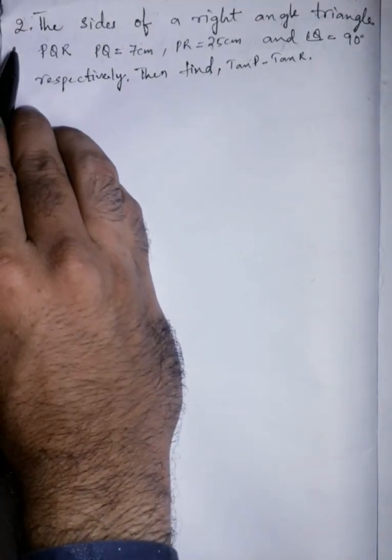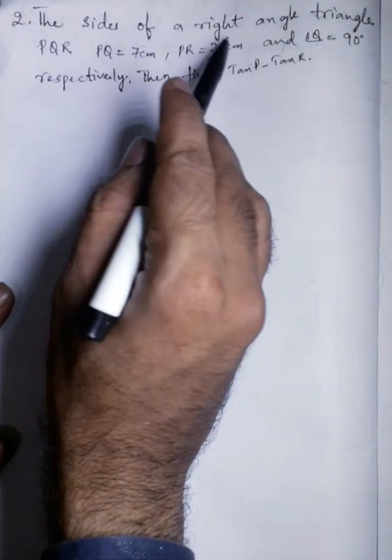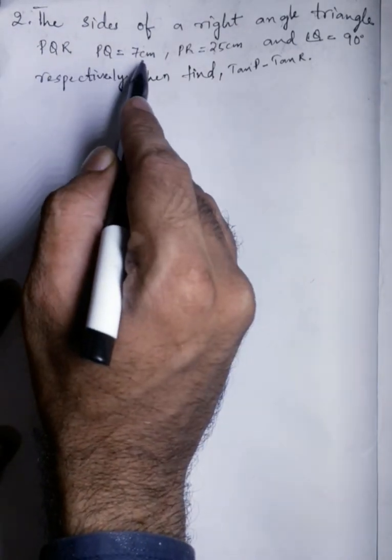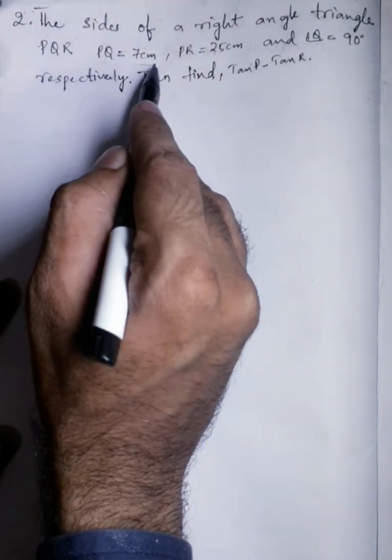Second problem. The sides of a right angle triangle PQR are PQ equals 7 cm. This is one side of a triangle.